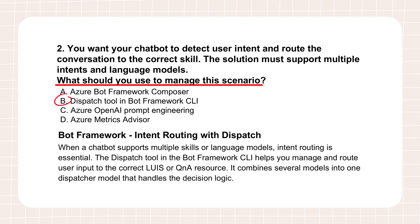Think of Dispatch like a smart receptionist or an old-school switchboard operator for your bot's brain. When a user types something, Dispatch looks at it and figures out: should this go to my LUIS app that handles booking requests, or maybe the Q&A knowledge base for FAQs? LUIS is the language understanding service for figuring out intent. LUIS helps understand the meaning; Dispatch decides which LUIS app or Q&A Maker service is best suited for that specific meaning. It lets you route users to specialized skills within your bot — really crucial when you have different intents, different languages, or specialized models involved. You break the bot's intelligence into pieces, and Dispatch is the coordinator.